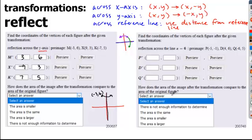And now the last question that you're going to see on many of these types of problems is, how does the area of the image after the transformation compare to the original? And because these are isometric transformations, there's no change in shape or size.